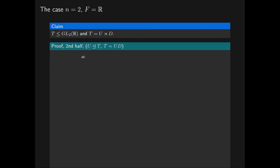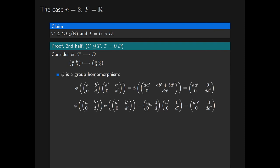For the second half, it remains to show that U is a normal subgroup of T and that T equals UD. We consider the following map phi from T into D, sending a matrix of T to the corresponding diagonal matrix. We note that phi is a group homomorphism: given two arbitrary matrices in T, applying phi to their product via star gives the same diagonal matrix as multiplying phi applied to each matrix separately, establishing that phi is a group homomorphism.